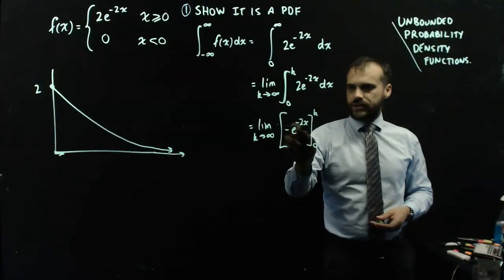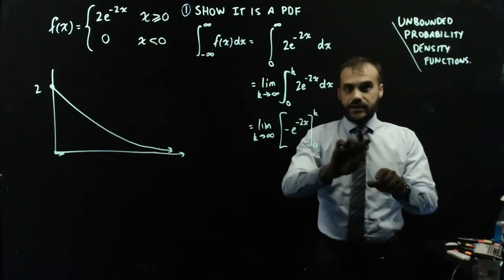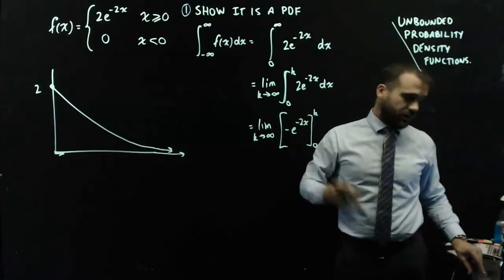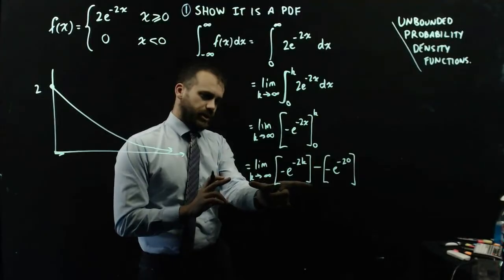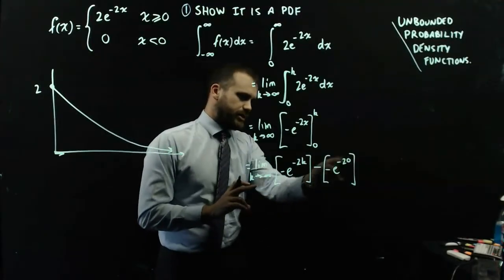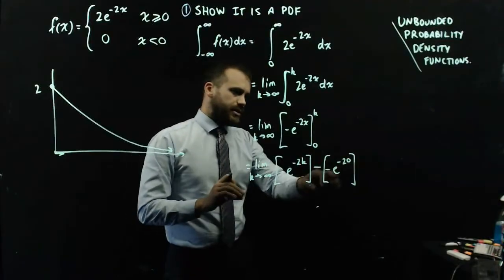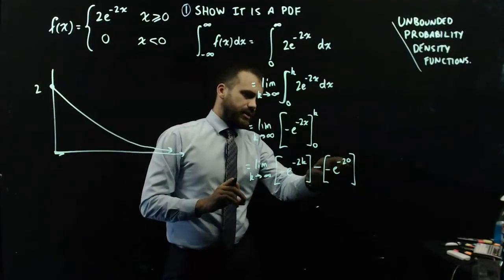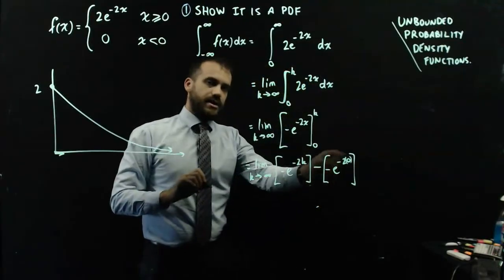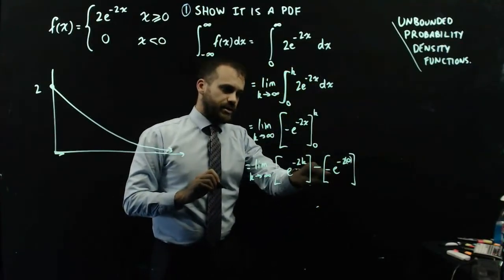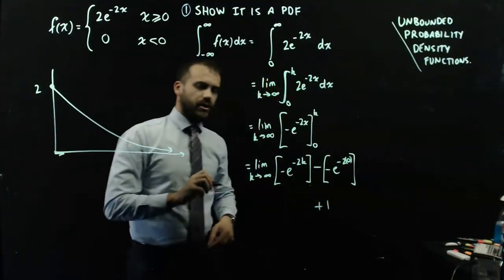Keeping that limit out the front, integrating gives us negative e to the negative 2x evaluated between k and 0. Now I substitute k and 0 in and subtract. The limit only applies to the part with k. Substituting 0: e to the negative 2 times 0 is e to the 0, which is 1, giving us negative 1 for that term — so negative negative 1 gives a plus 1.